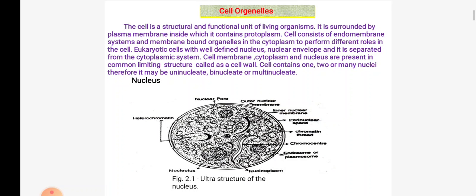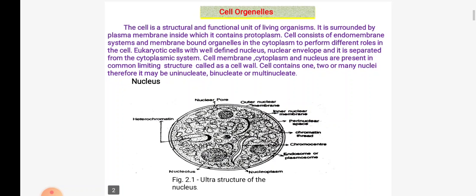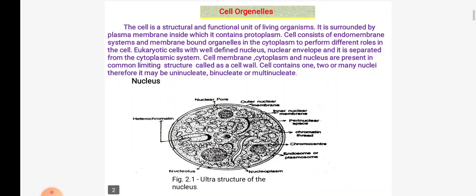A cell contains one, two or many nuclei. It may be uninucleate, binucleate or multinucleate. The ultrastructure of the nucleus consists of nuclear pore, nuclear membranes, perinuclear space, chromatin material, chromocenter, endosomes, nucleolus and nucleoplasm.